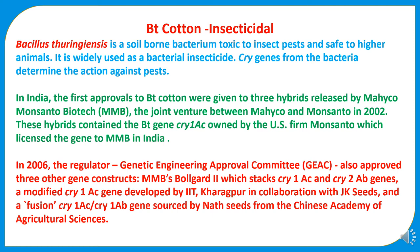These hybrids contain the Bt gene Cry1Ac owned by US firm Monsanto, which licensed the gene to MMB in India. In 2006, the Genetic Engineering Approval Committee (GEAC) also approved three other gene constructs: MMB Bollgard 2, which stacks Cry1Ac and Cry2Ab genes; a modified Cry1Ac gene developed by IIT Kharagpur in collaboration with JK Seeds; and a fusion gene of Cry1Ac and Cry1Ab sourced by Nath Seeds from the Chinese Academy of Agricultural Sciences.